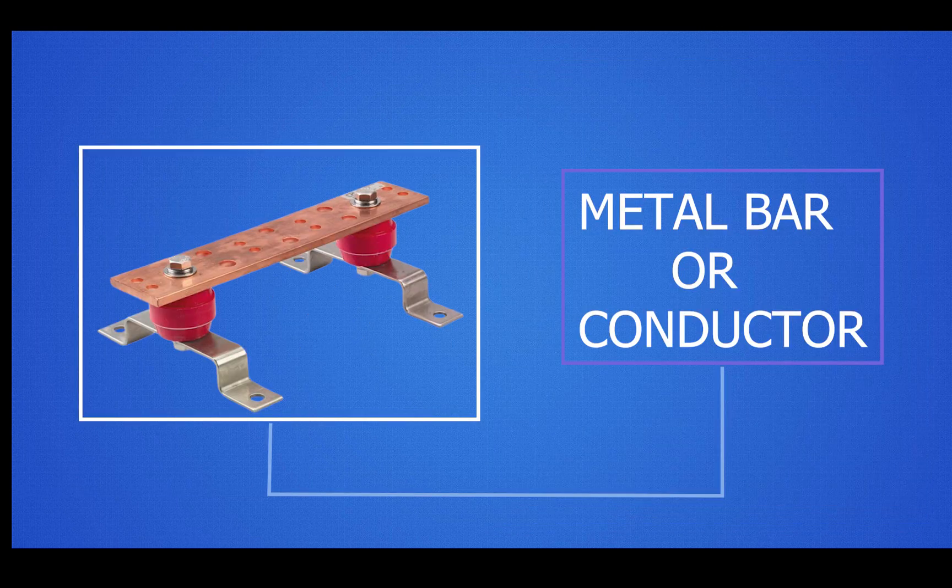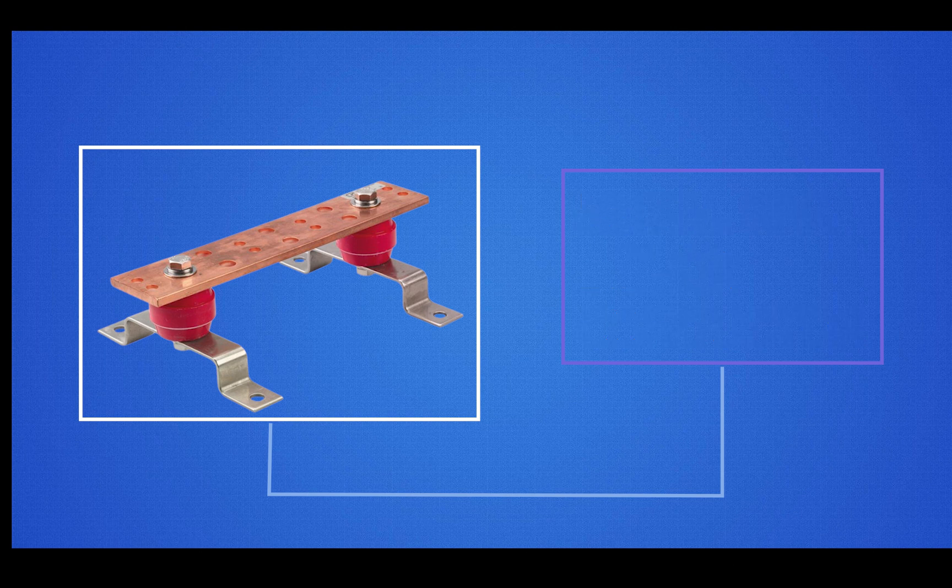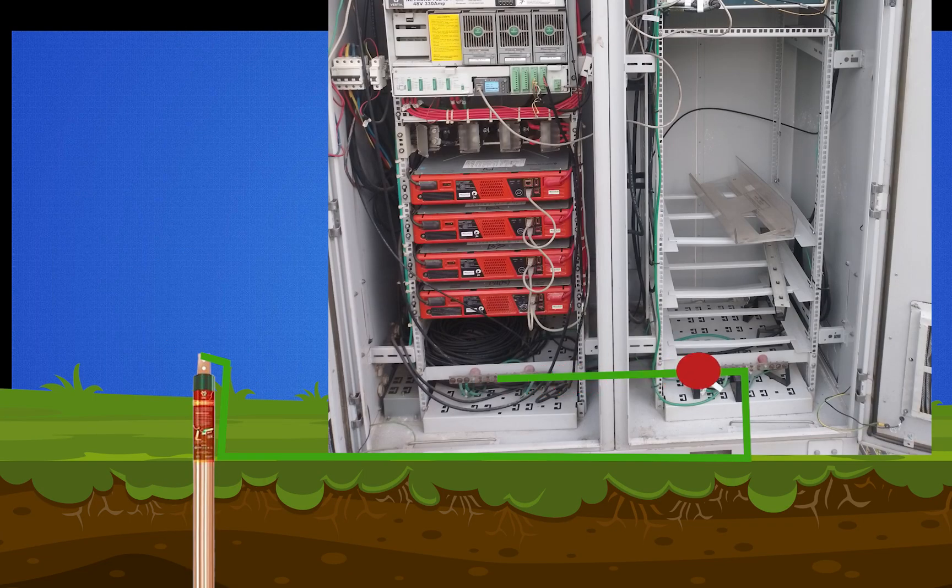The internal grounding bar consists of a metal bar or conductor that provides a low impedance path for electrical currents to flow safely into the ground. It is usually made of copper or another highly conductive material.